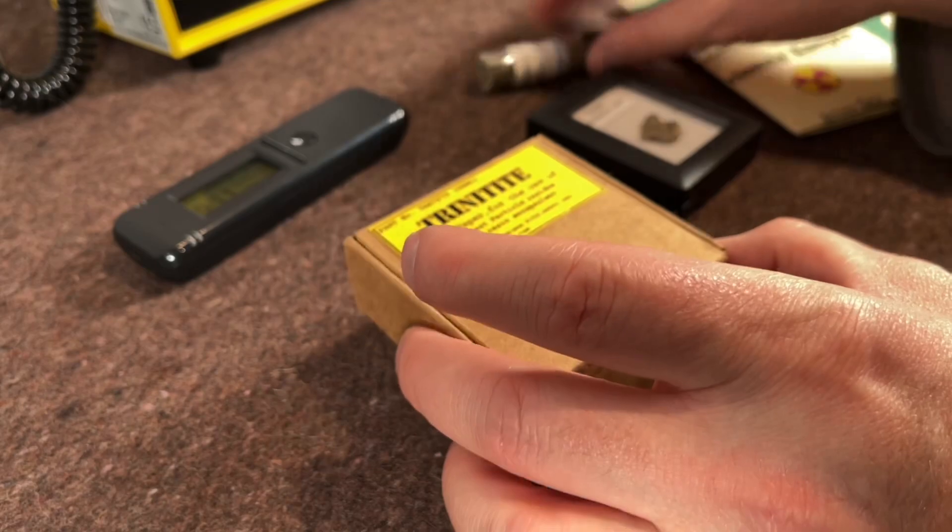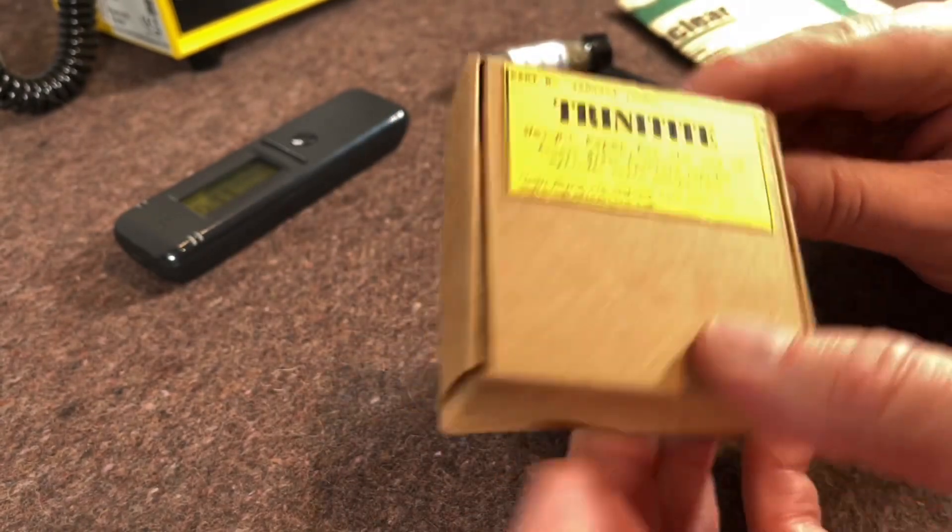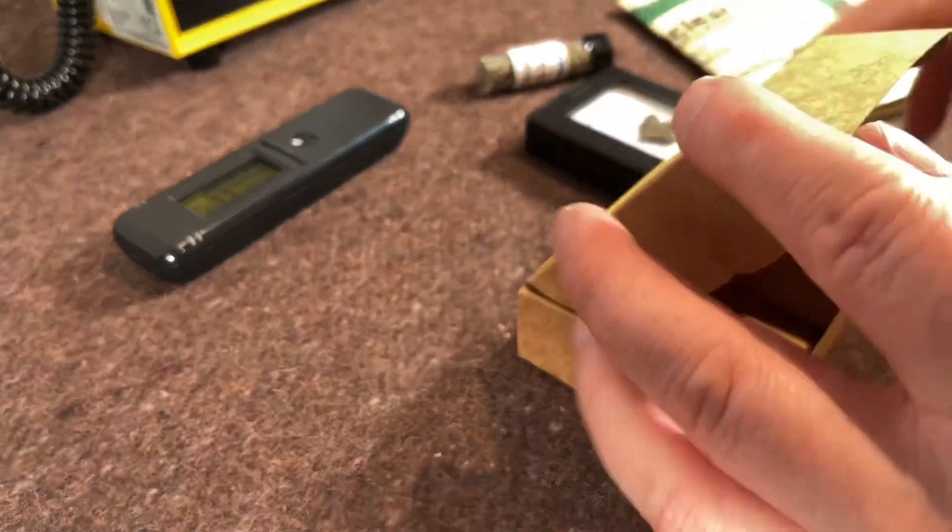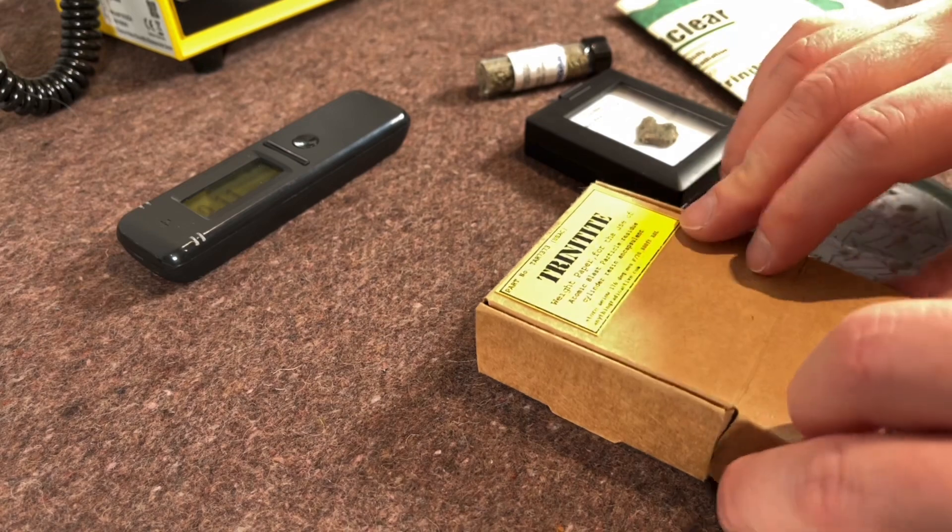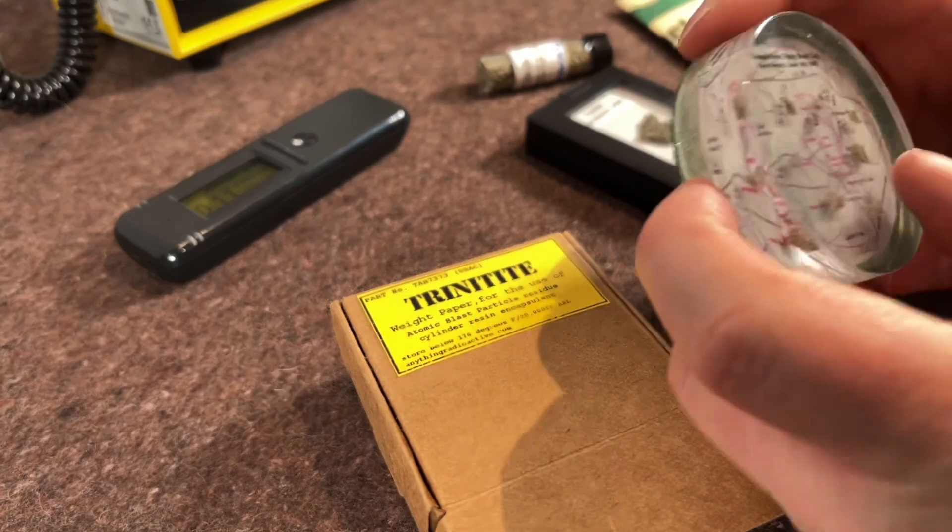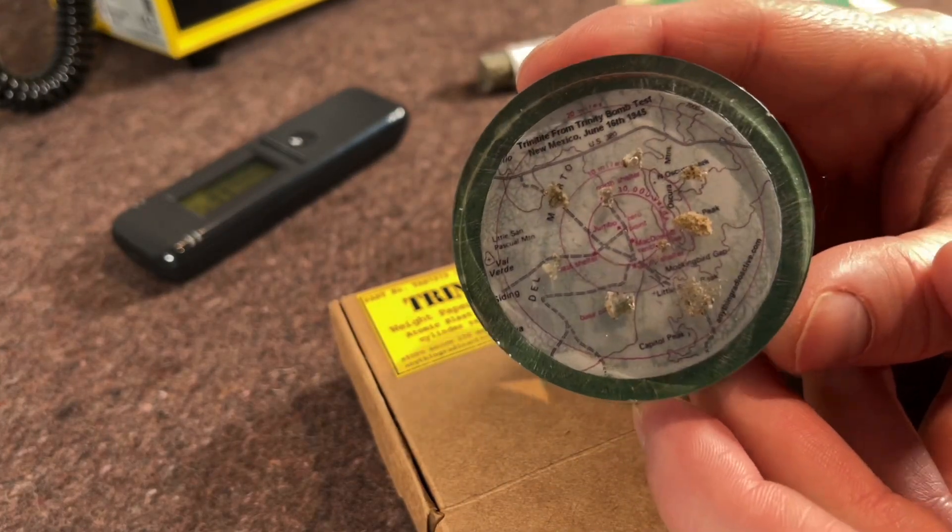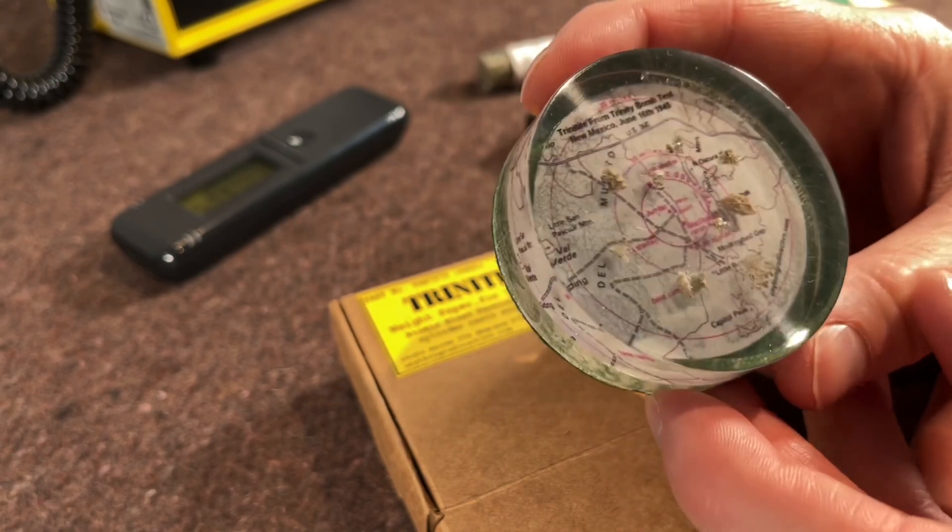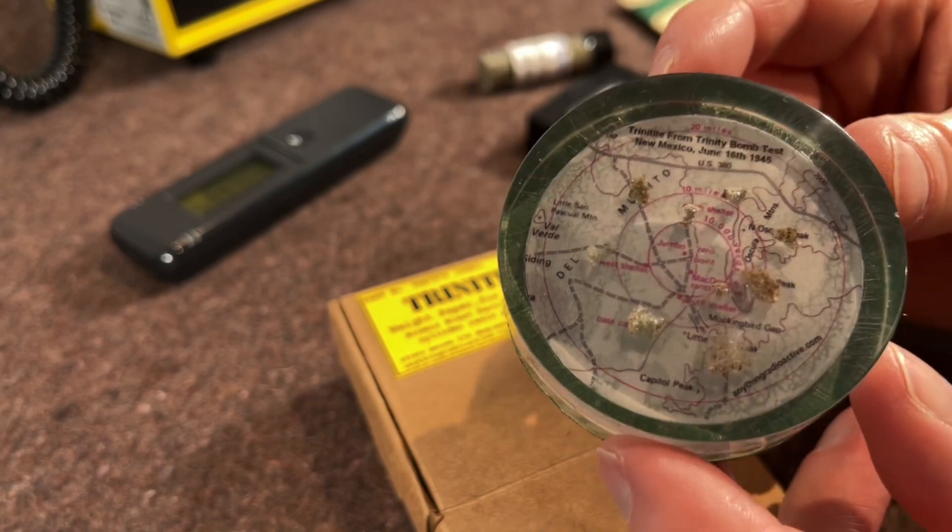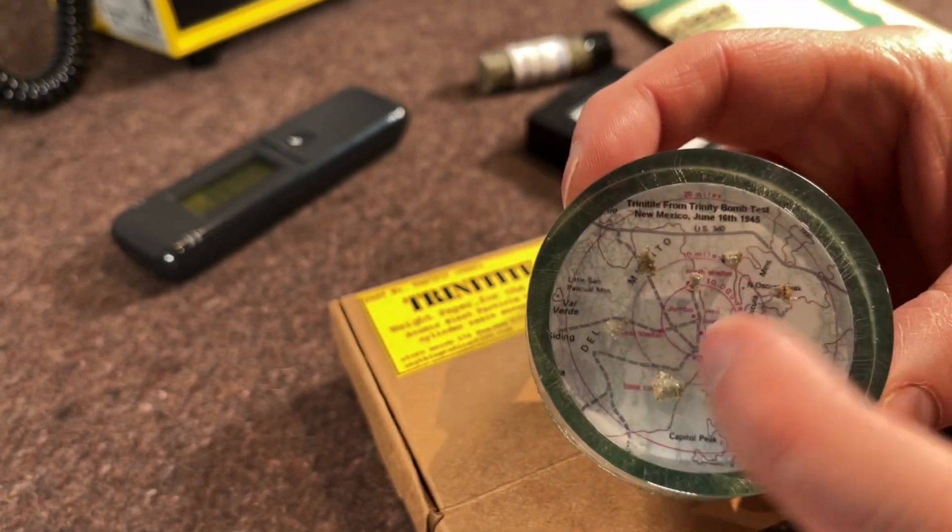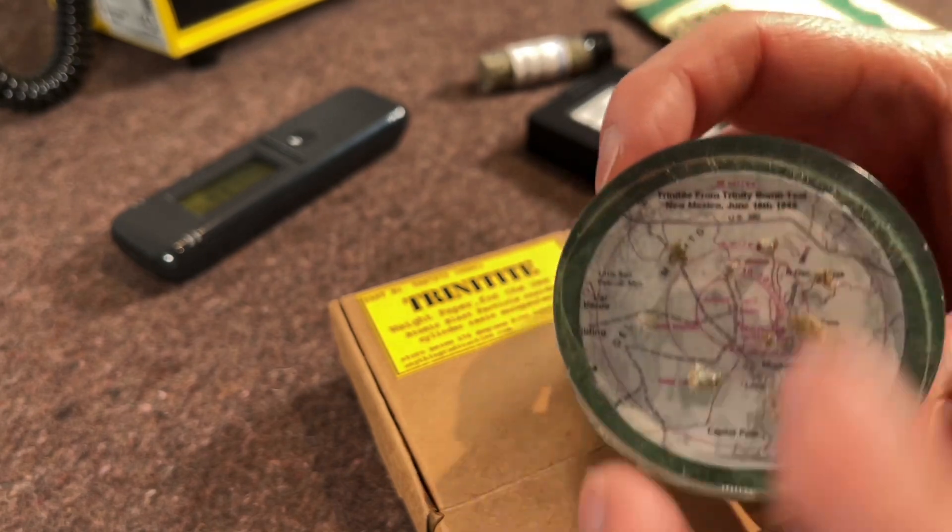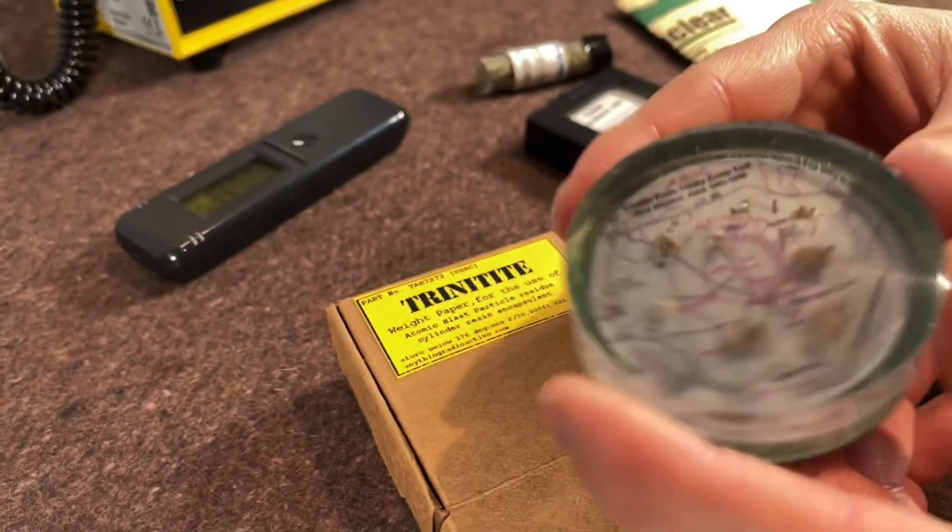Okay so the camera's in good and close. This is the first piece I got when I started collecting Trinitite. This is from anythingradioactive.com, a company in the UK that sells little nuclear curiosities and Geiger counters. It shows a map of the Almogordo bombing range that was used during the Trinity project. You can see the pink is where ground zero was and then there's a little fleck of Trinitite in it.